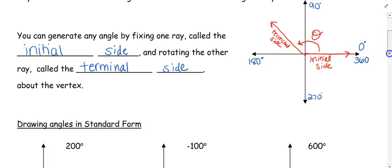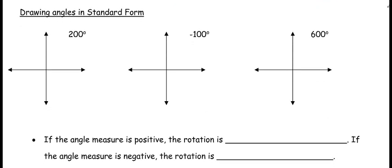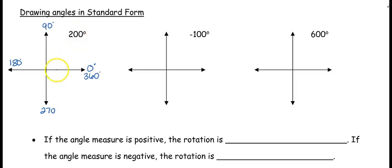Let's go ahead and practice. We're going to start with 200 degrees. We know our angles — we're starting at 0. We've got 90, 180, 270, and all the way around is 360 degrees. So if I want to go to 200, we're starting here. If I go up here we'd go to 90, 180 — I want 200 degrees, so I'm going to go 20 degrees past 180.